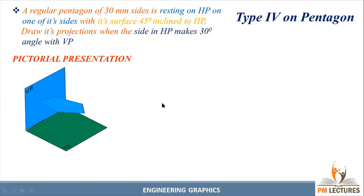Let us read the question. A regular pentagon of 30 mm side is resting on HP on one of its sides, with its surface 45 degrees inclined to HP. Draw its projection when the side in HP makes a 30 degree angle with PP. This is the question provided for us, so we can write the given data.